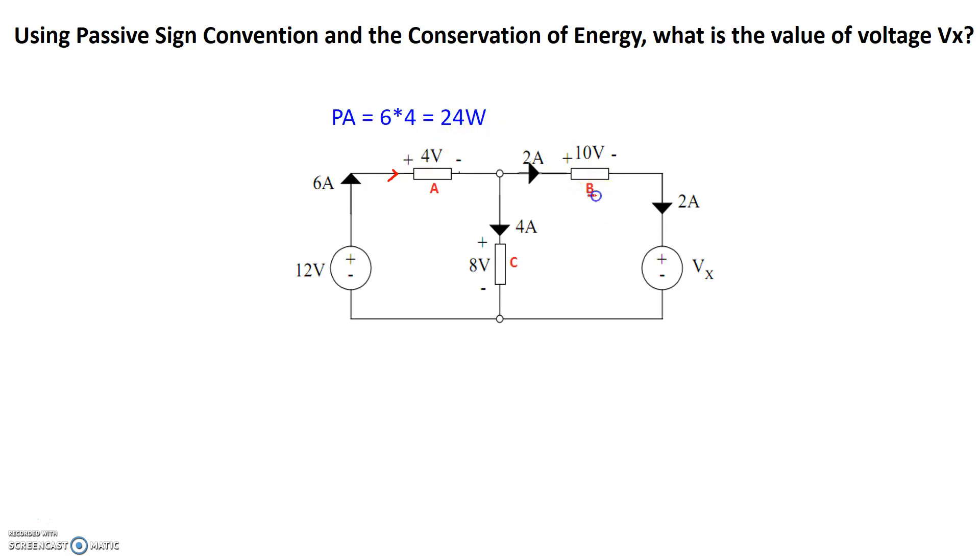Take a look at element B. 2 amps is flowing into the positive terminal and exiting out of the negative, so it also follows passive sign convention. So the total power absorbed by this element is 2 amps times 10 volts, which is 20 watts.